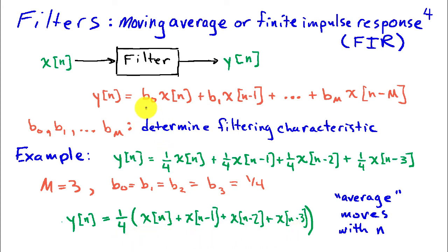These filters are called moving average because the averaging of the input signal moves as n changes. If n equals 10, then I'm averaging x of 10 through x of 7. When n is 11, I'm averaging x of 11 through x of 8, and so on. So the average moves as n moves. Even when these coefficients are not all the same and we're not strictly averaging in the conventional sense, this type of filter is called a moving average. It's a generalization of averaging when we have coefficients that aren't identical.